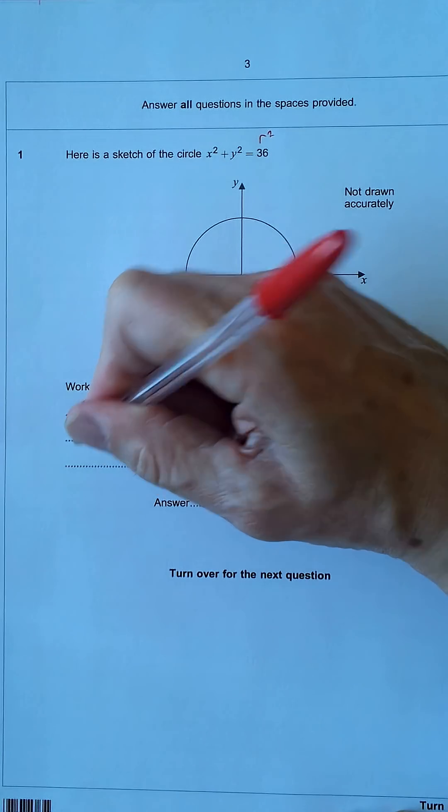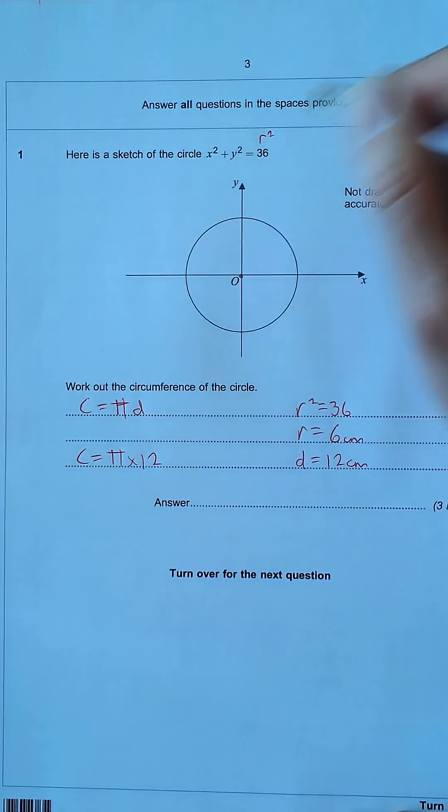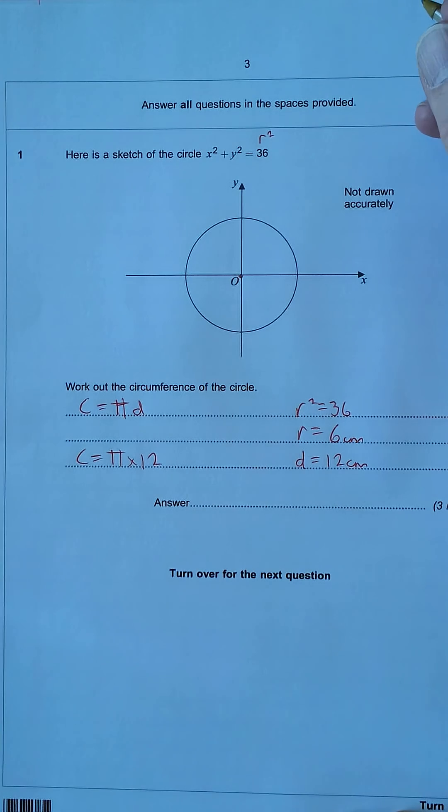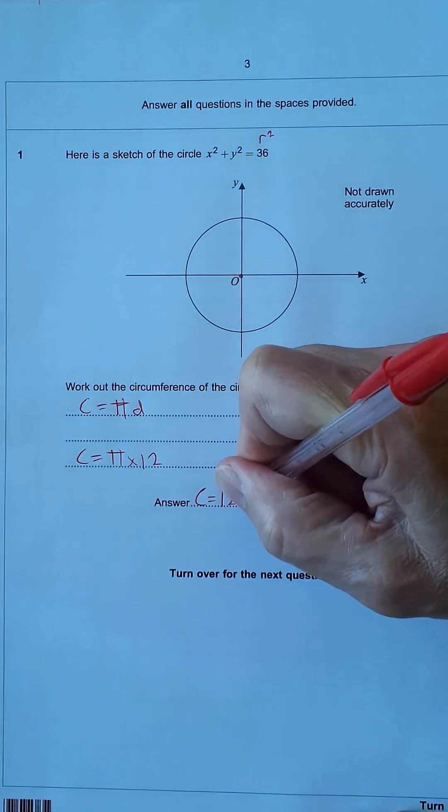So circumference, back over here, c equals pi times 12, and an exact answer would be 12 pi. So I like to put that c equals 12 pi.